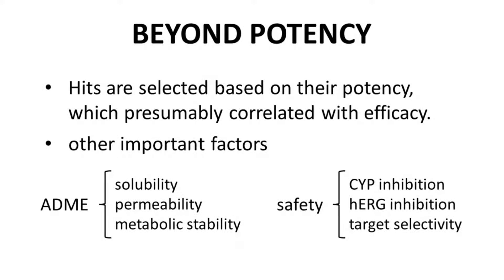HITs are initially identified based on their potency in a primary assay, so it should not be too surprising that potency across all HIT series is likely uniformly promising. On-target potency will presumably lead to efficacy. There are other properties, however, that must be considered during lead selection.